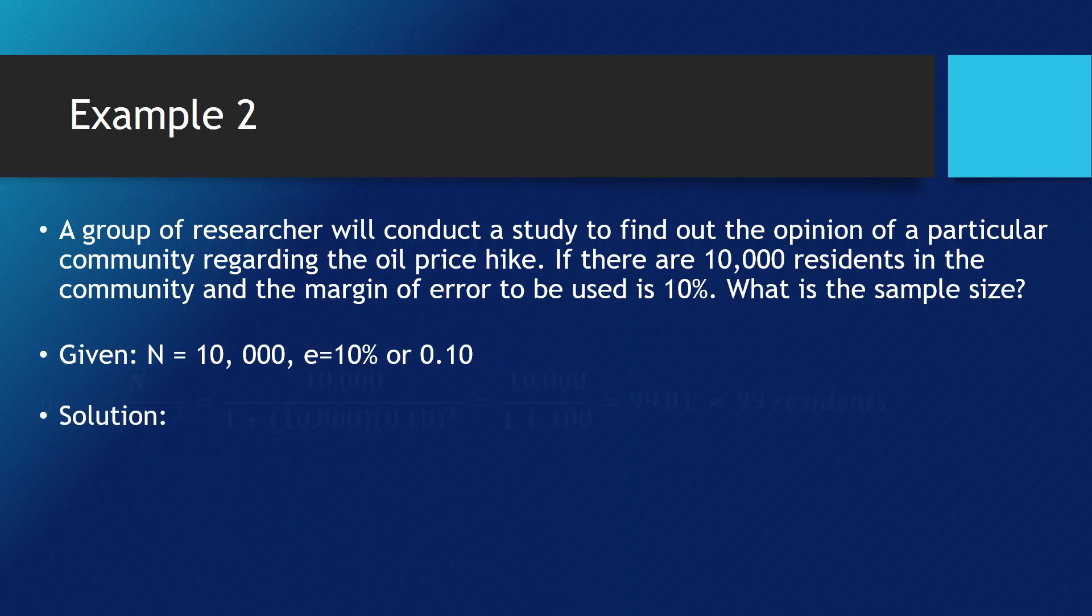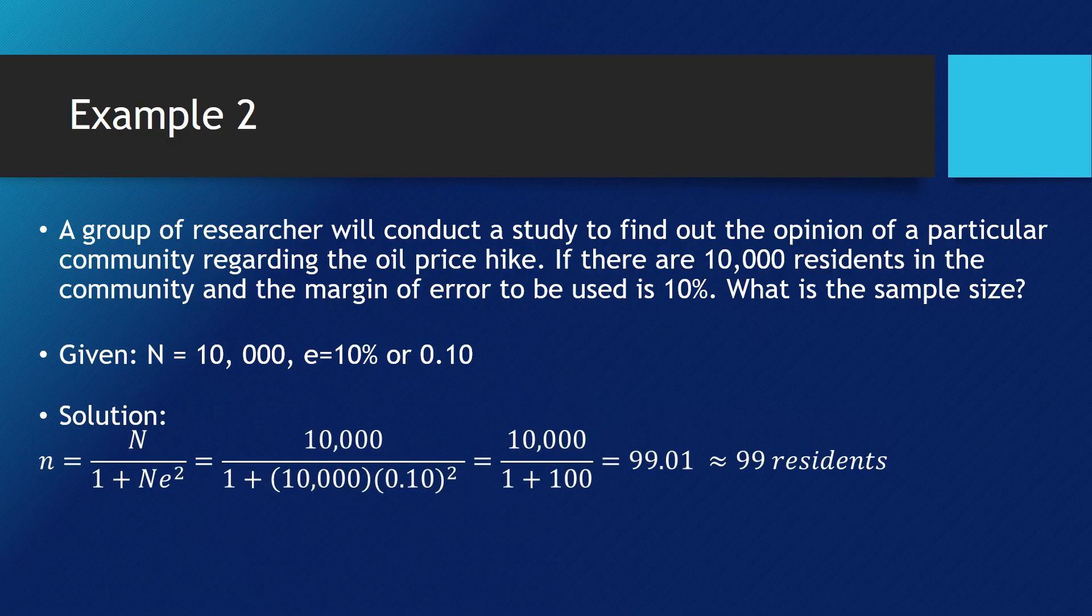Let us solve this one using the same formula, the Sloven's formula. Sample is the small letter N, the big letter N. These are the populations. We are going to substitute the given. We have here for the population that is 10,000 and for the margin of error, we have 0.10.